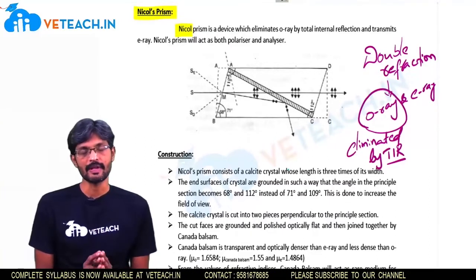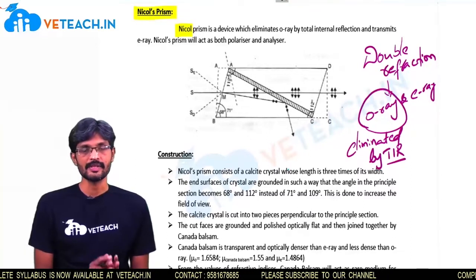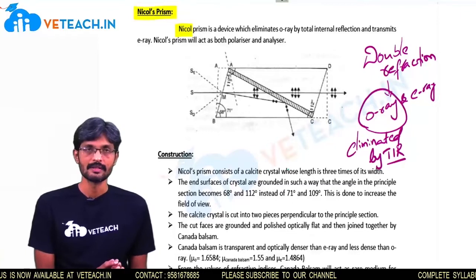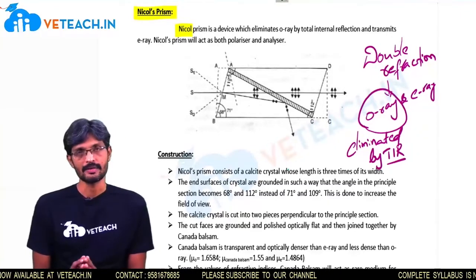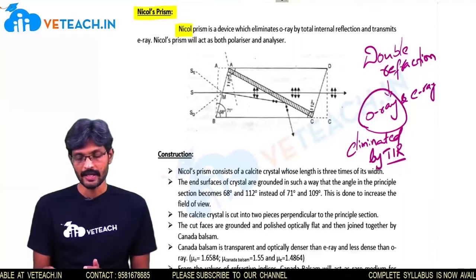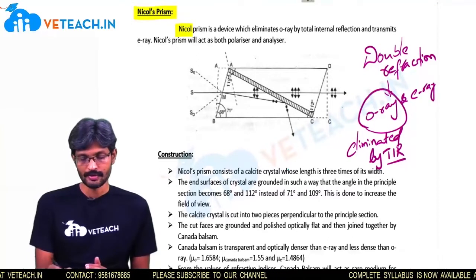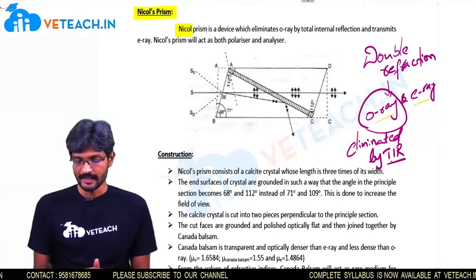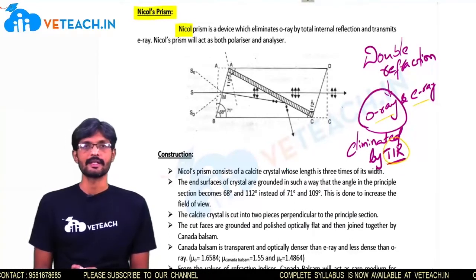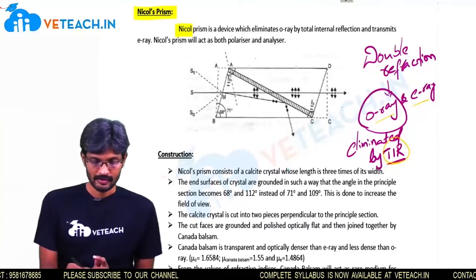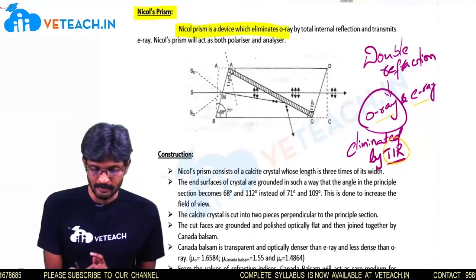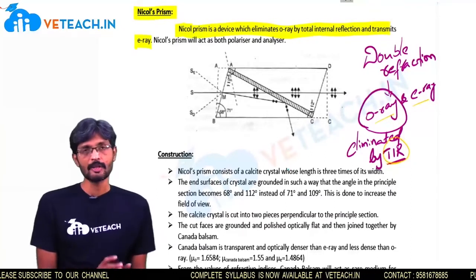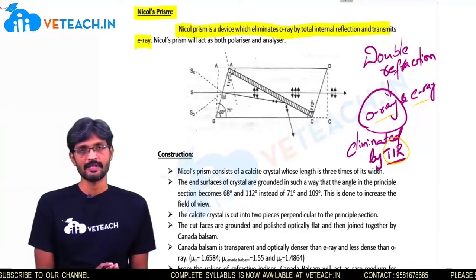It is easy to eliminate the O-ray compared to the E-ray, because the velocity of the E-ray in the crystal changes with the direction of propagation in the crystal. That is why the Nicol Prism is designed so that the O-ray and E-ray are produced by double refraction, and the O-ray is eliminated by total internal reflection, while the E-ray is transmitted.